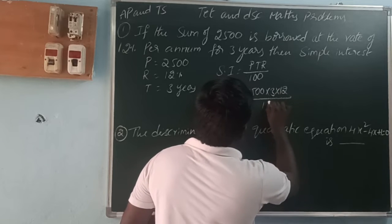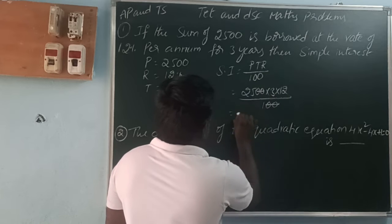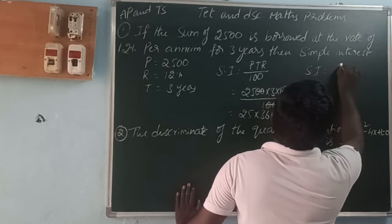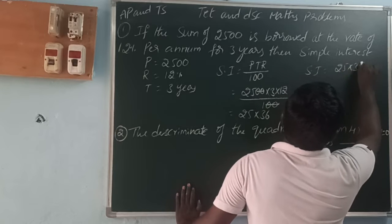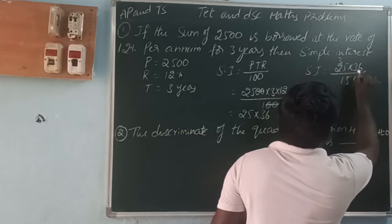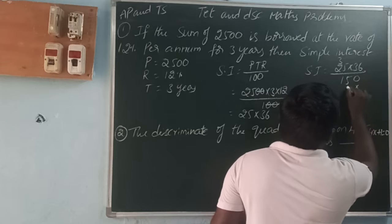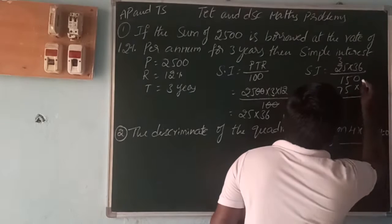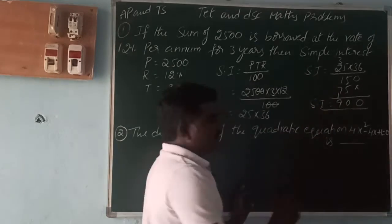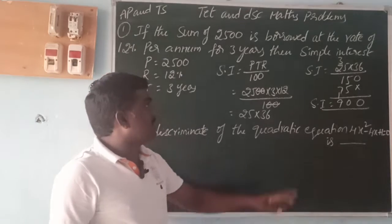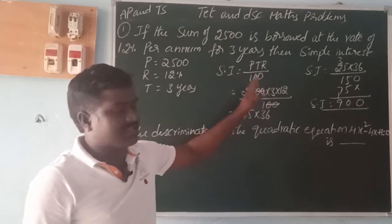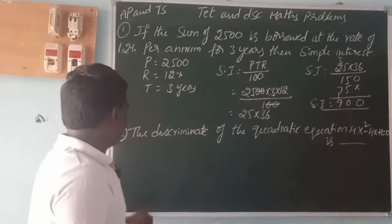So simple interest equals 25 into 36, that is 900. So the simple interest is 900. To summarize: amount borrowed is two thousand five hundred, rate of interest is 12%, time is 3 years, and the simple interest is 900.